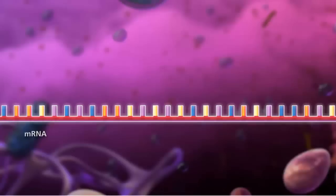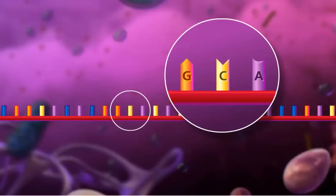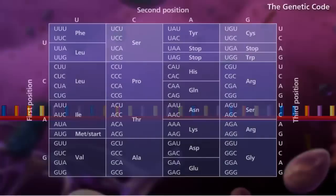The nitrogenous bases are grouped into three-letter codes called codons. The genetic code includes 64 codons. Most codons code for specific amino acids.